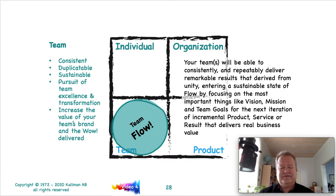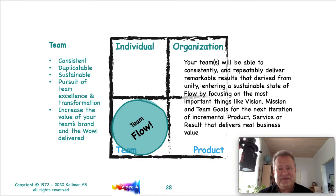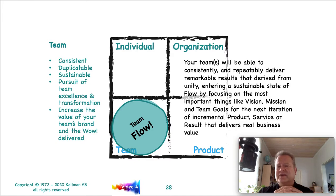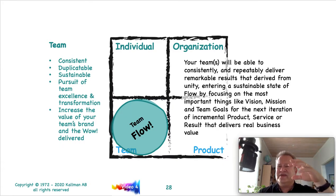The vision, goal, and mission for this video is that your teams will be able to consistently and repeatedly deliver remarkable results derived from unity — remember the U in the unified vision framework. It's really important to develop team unity. If you can do that, you can enter into a sustainable state of flow by focusing on the most important things: vision, mission, and team goals for the next iteration of the incremental product, service, or result that delivers real business value.